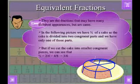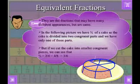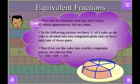As the cake is divided into two congruent parts and we have only one of those parts. But if we cut the cake into smaller congruent pieces, we can see that 1/2 = 2/4 = 4/8 = 3/6.